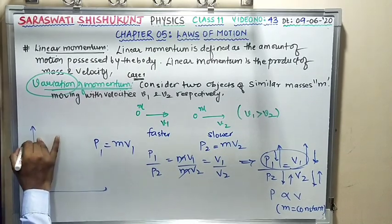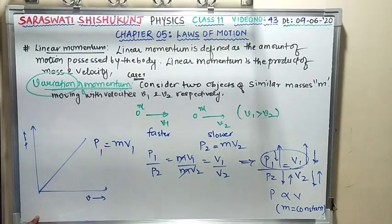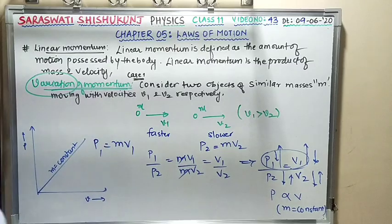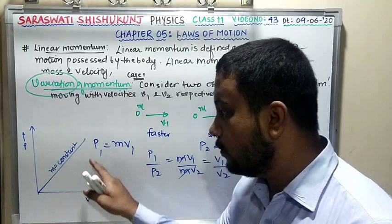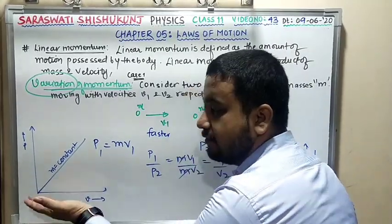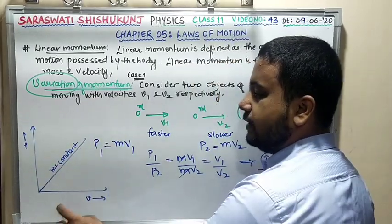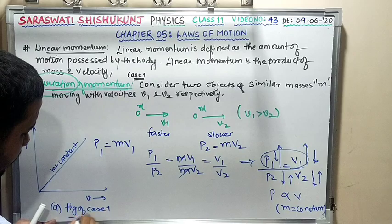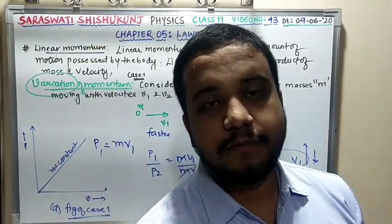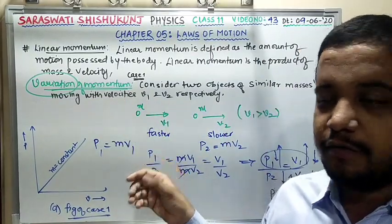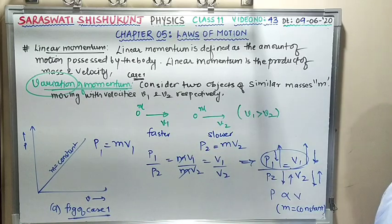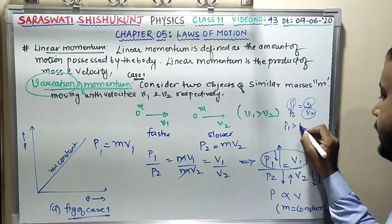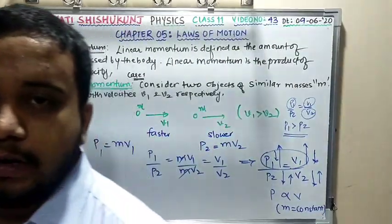Plotting a P versus V graph (at constant mass) gives a straight line — as velocity increases, momentum increases proportionally. Since V1 > V2 and mass is the same, P1 > P2. This is the conclusion of Case 1.